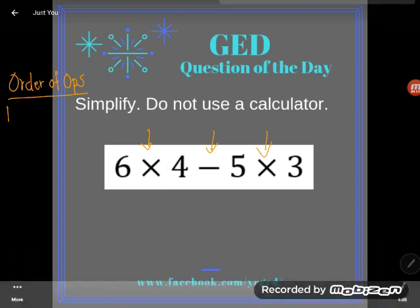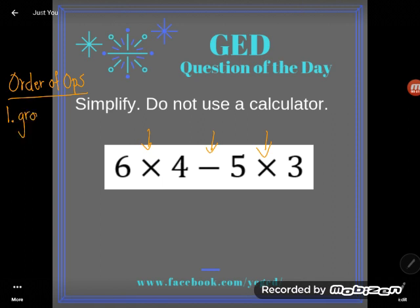So order of operations says to handle any groupings first - I don't see any of those. Then any exponents - I don't see any of those. But then any multiplication and division, so I definitely have some of that.